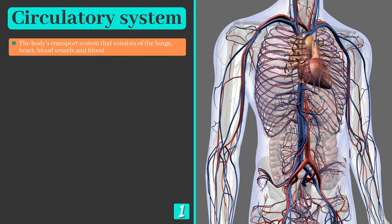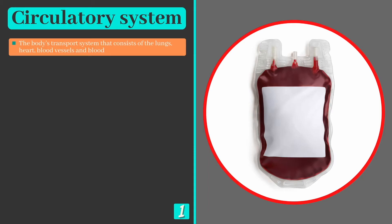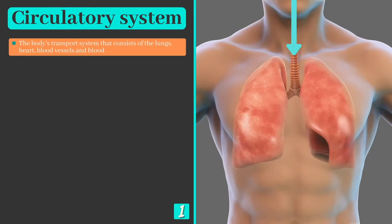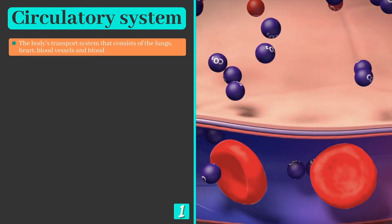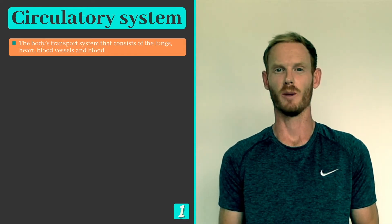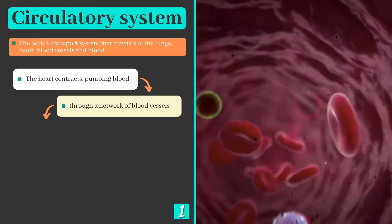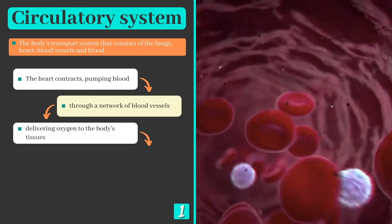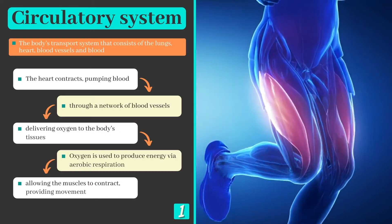We'll begin with a brief introduction of the circulatory system, which can be defined as the body's transport system that consists of the lungs, heart, blood vessels, and blood. The role of the respiratory system is to draw air into the lungs so oxygen can pass into the bloodstream and carbon dioxide can be removed from it. Once the respiratory system has done its job, the circulatory system takes over. The heart pumps blood through a network of blood vessels, delivering oxygen to the body's tissues. Oxygen can then be used to produce energy, enabling our muscles to contract and providing movement.